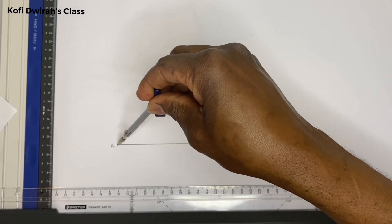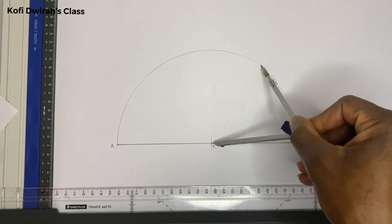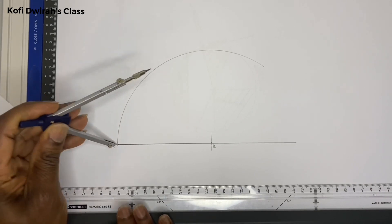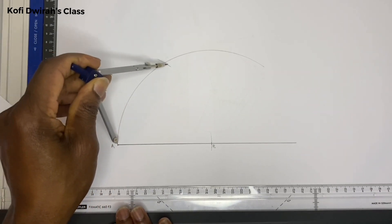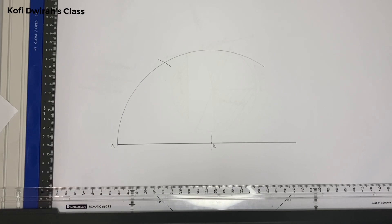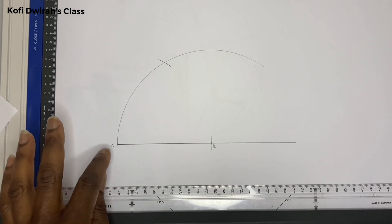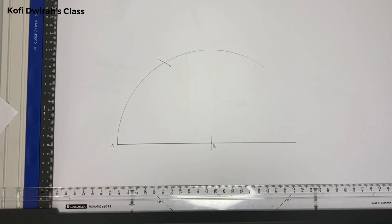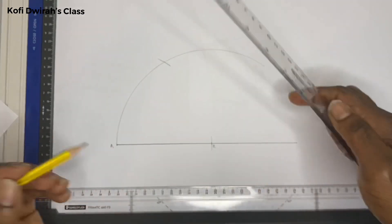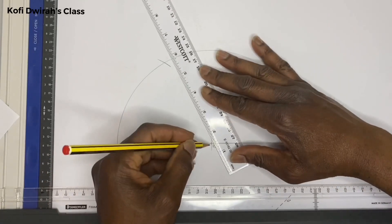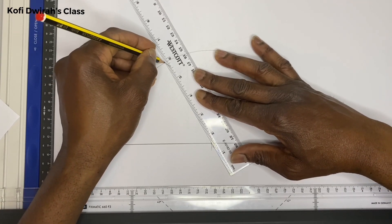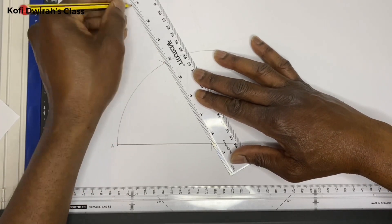Draw an arc from here. To draw a 60 degrees angle, at point A you mark here, then draw a straight line. Because the angle is angle ABC, the angle will be at this point. Now draw a straight line from point B through here and draw a straight line. The angle here is 60 degrees.